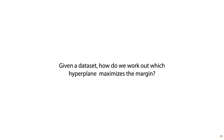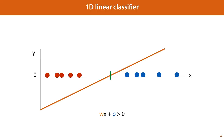Surprisingly, there is a way to phrase the maximum margin hyperplane objective as a relatively simple optimization problem. To work this out, let's first review how we use a hyperplane to define a linear decision boundary. Here is the one-dimensional case. We have a single feature, and we first define a linear function from the feature space to a scalar y.